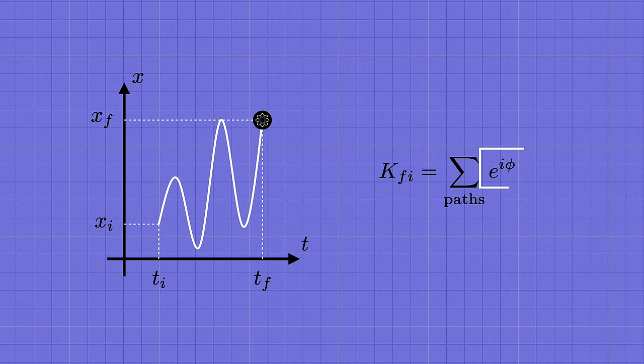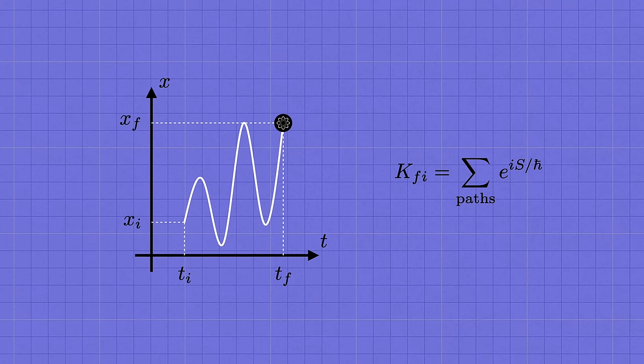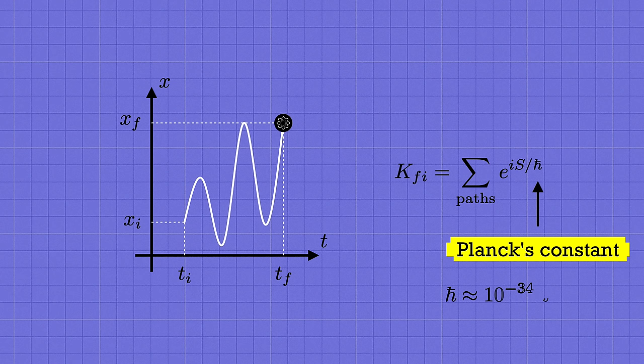Well, I already mentioned the answer back at the beginning of the video. For each trajectory, the complex phase it contributes is given by e to the i times s over h-bar. h-bar is the quantum mechanical constant, called Planck's constant. Its value in SI units is given approximately by 10 to the minus 34 joule seconds. s, meanwhile, is the action, which is a particular number that we can compute for any given trajectory. You might have run into it before because it's something that already plays a central role in classical mechanics. But here's how it's defined.